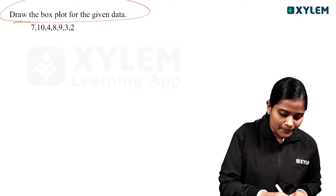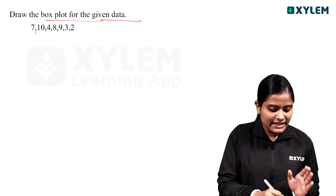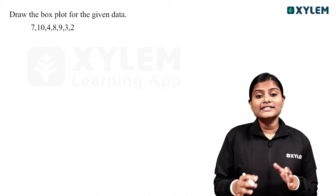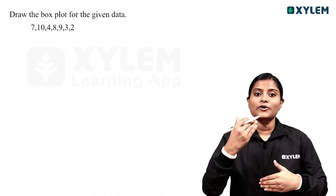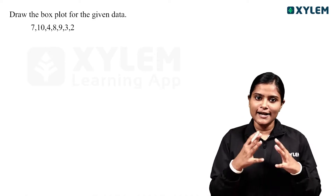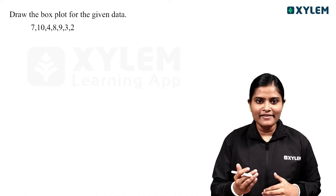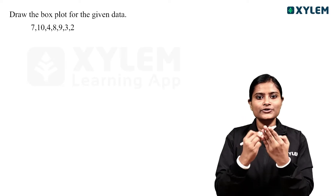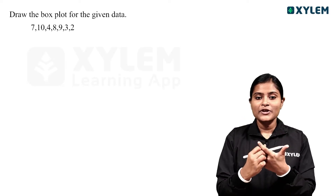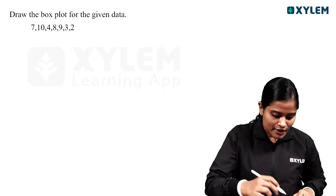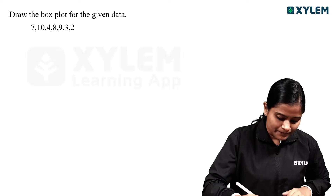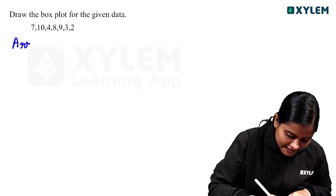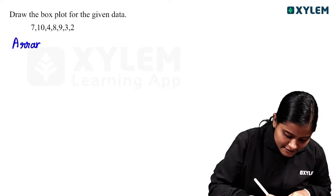We have a question: Draw the boxplot for the given data. To find the boxplot, we need to know the minimum value, maximum value, Q1, Q2, and Q3. First, we arrange the data in ascending order.